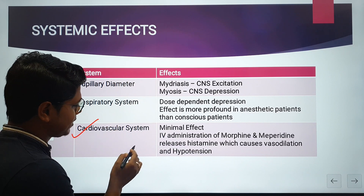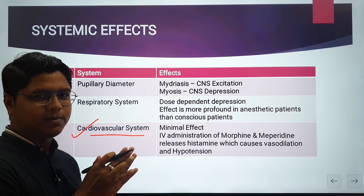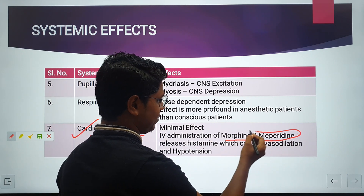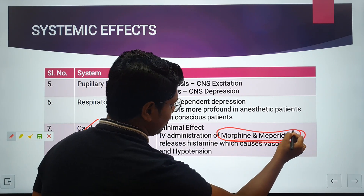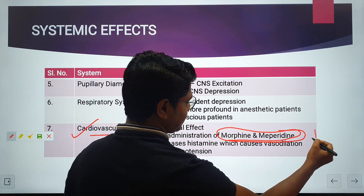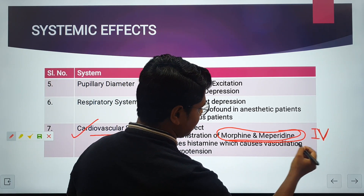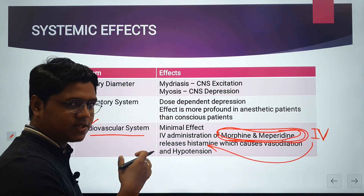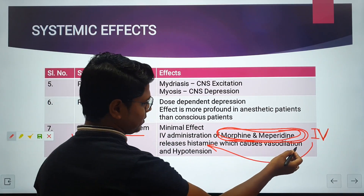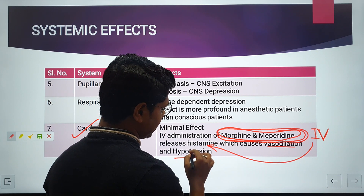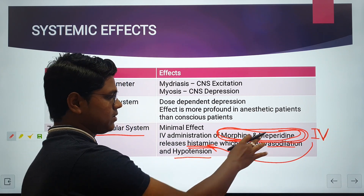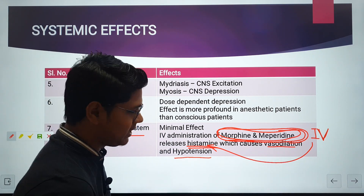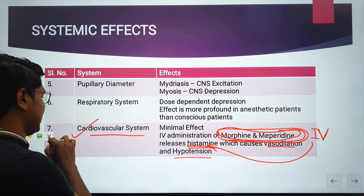Cardiovascular system: opioids have very minimal effects on the cardiovascular system. The exceptions are morphine and meperidine — when given intravenously, these two drugs release histamine, causing vasodilation and hypotension. That is why morphine and meperidine are not administered intravenously; they are administered intramuscularly.